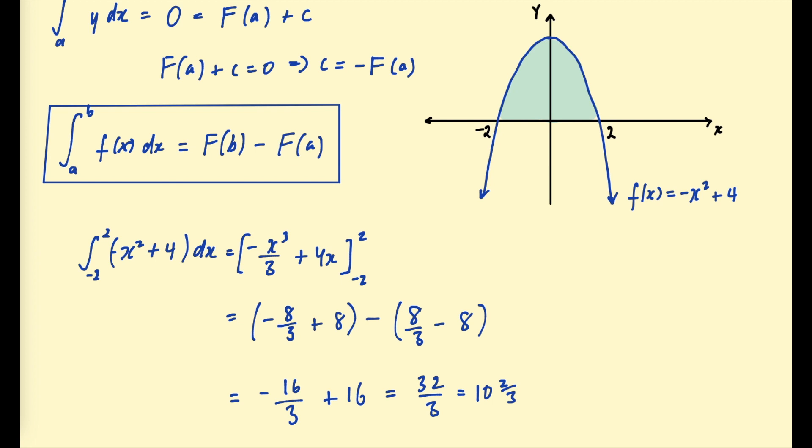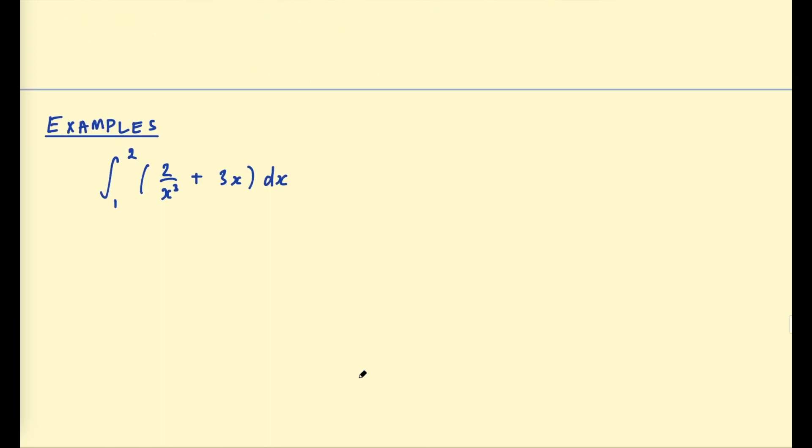So this area under this curve from negative 2 to 2 is 10 and 2 thirds. And you can kind of eyeball this if you want. So you could draw a rectangle larger than the area. The height here is 4. So this rectangle has a width of 4 and a height of 4, so that area is 16. And then you could draw a rectangle smaller. So let's say this was negative 1 to 1. And the height there if we plug in 1 we get 3. So the area of that rectangle is 2 times 3 which is 6. It's a pretty wide margin but at least that area is within that. And it seems reasonable with a quick approximation. So there you go. That is the process. Let's have a look at a few more examples.